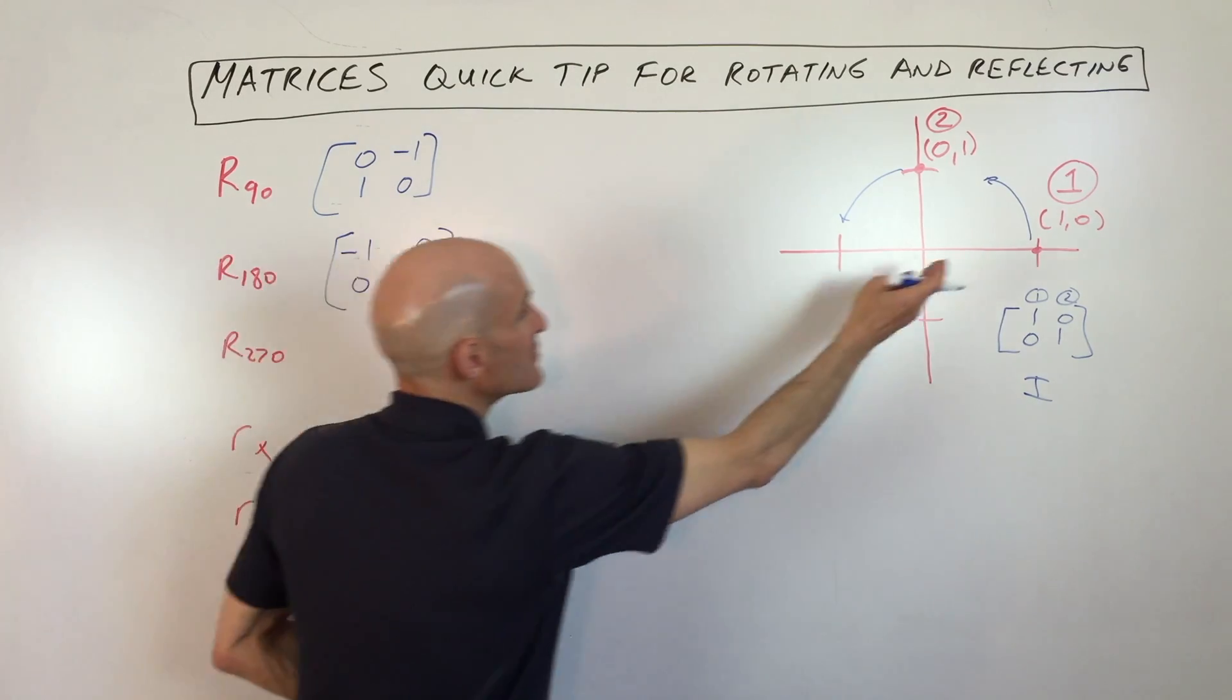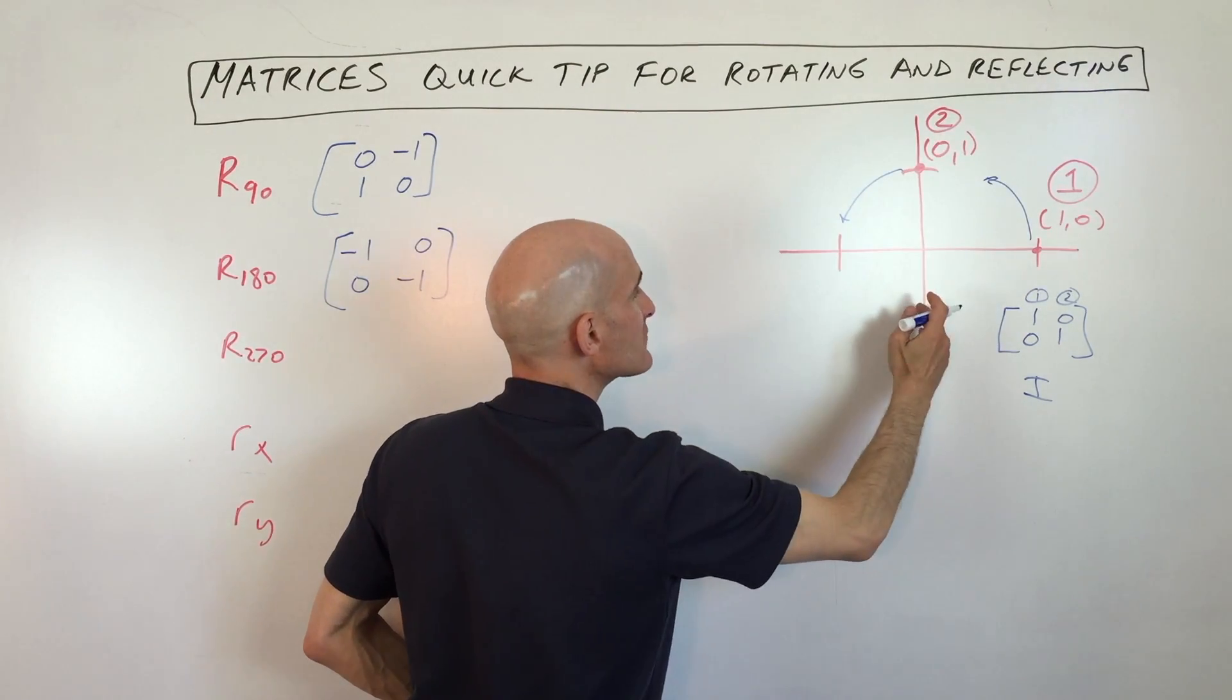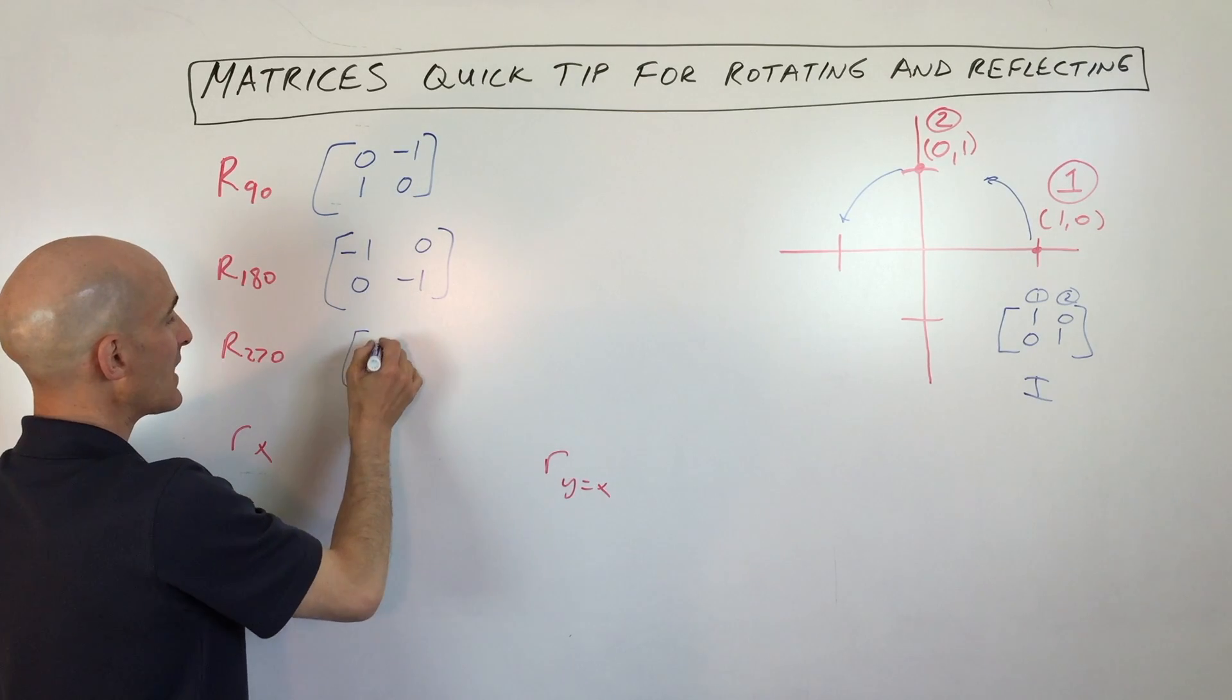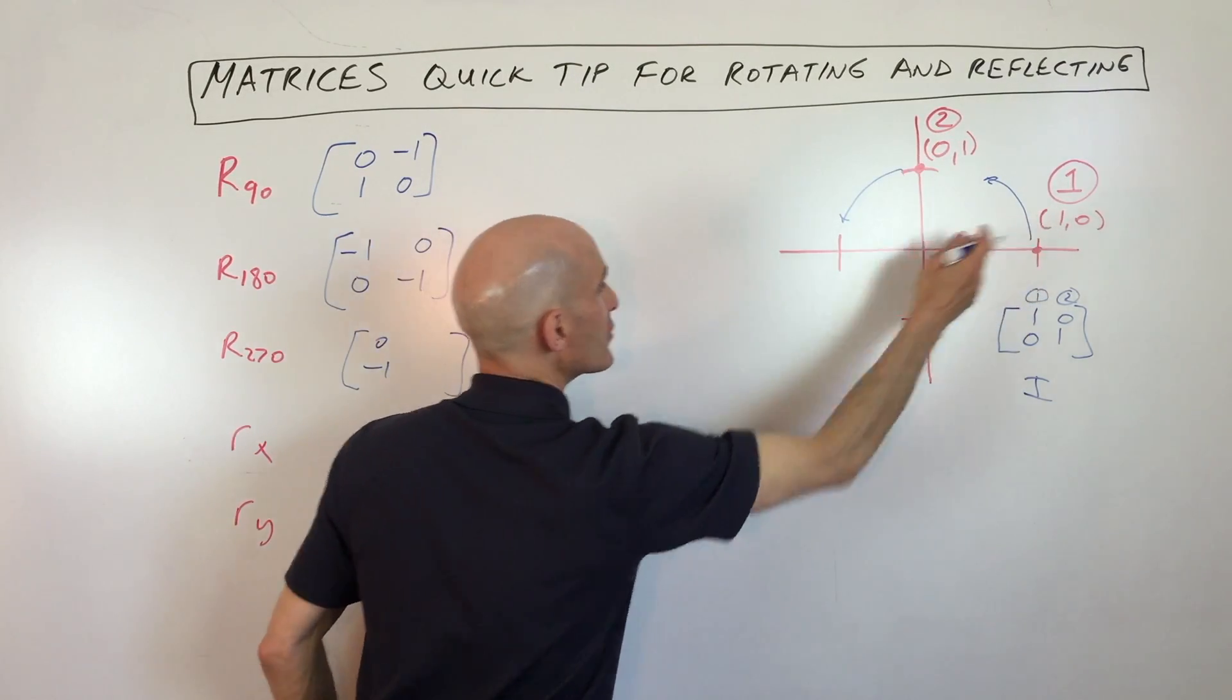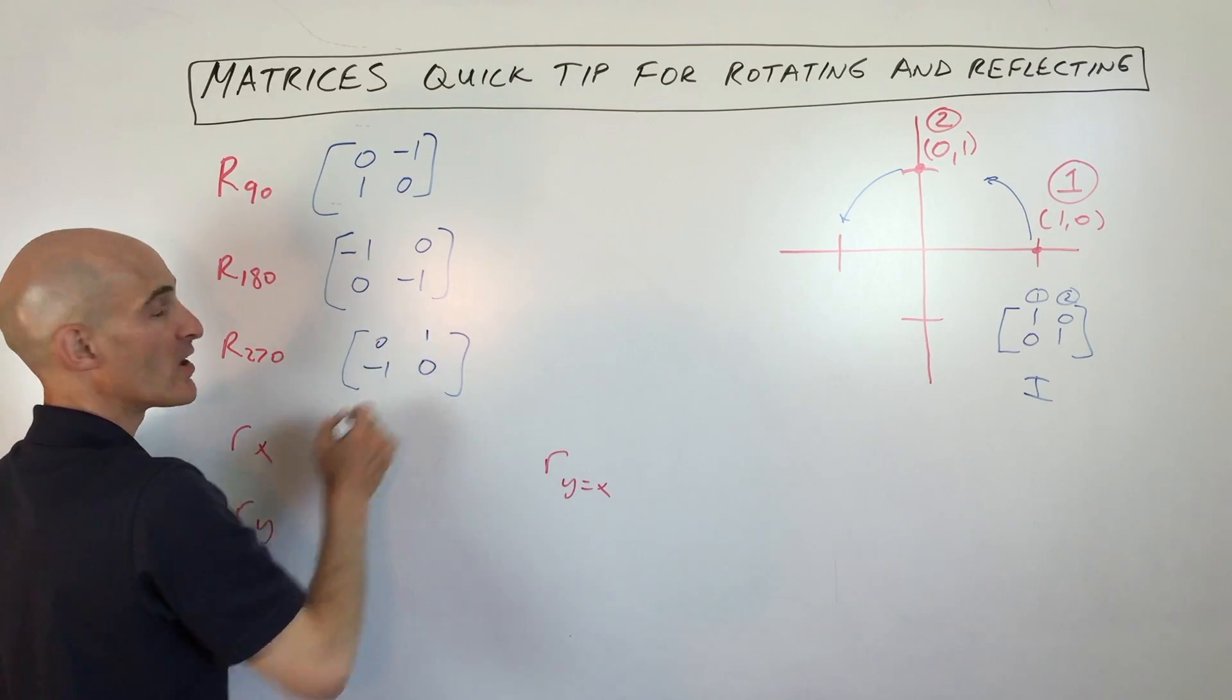If you rotate 270, this point here is going to rotate three-quarters of a turn. It's going to end up at zero, negative one. And this point, zero, one, is going to rotate three-quarters of a turn. It'll be at one, zero.